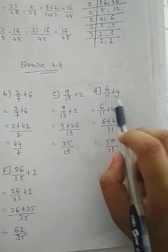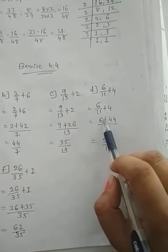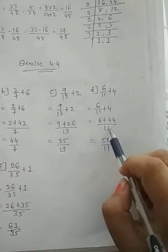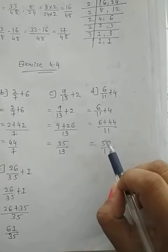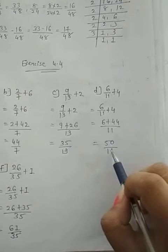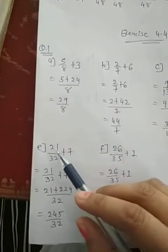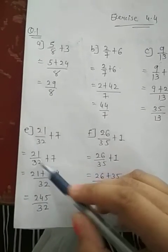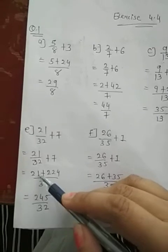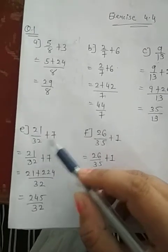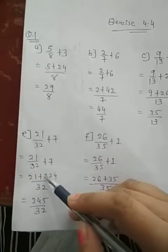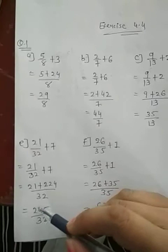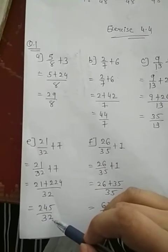Next, D. 6 divided by 11 plus 4. 6 plus multiplication, 11 times 4 is 44, whole divided by 11. So 44 plus 6, 50 divided by 11. E. 21 divided by 32 plus 7. 21 plus, multiplication, 32 times 7 is 224, whole divided by 32. So, 245 divided by 32.